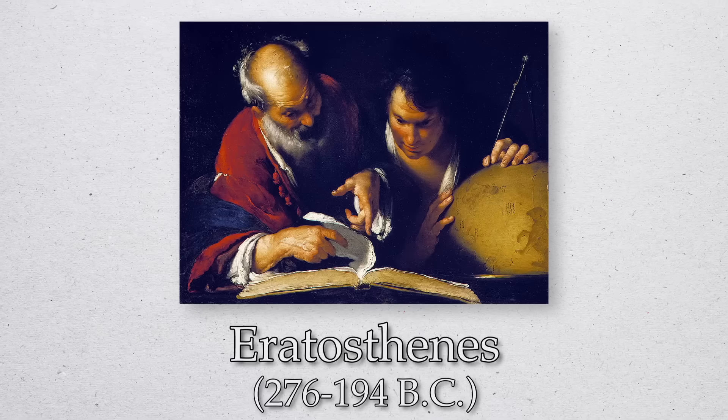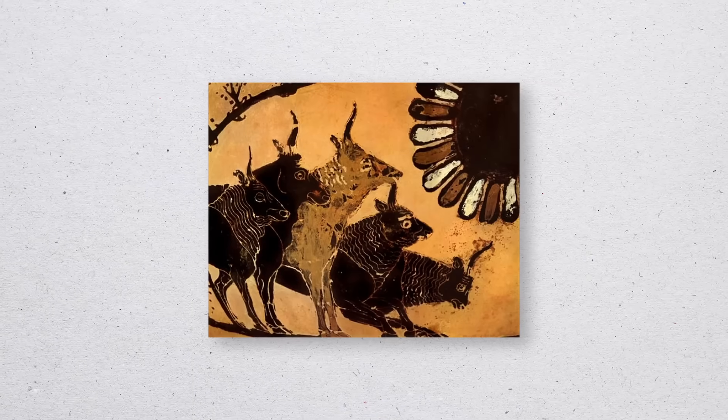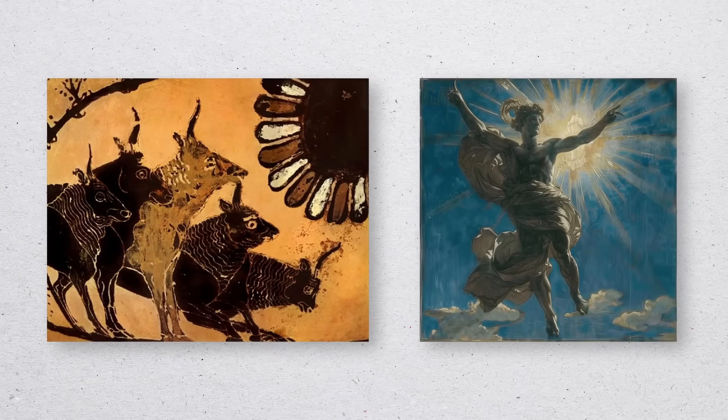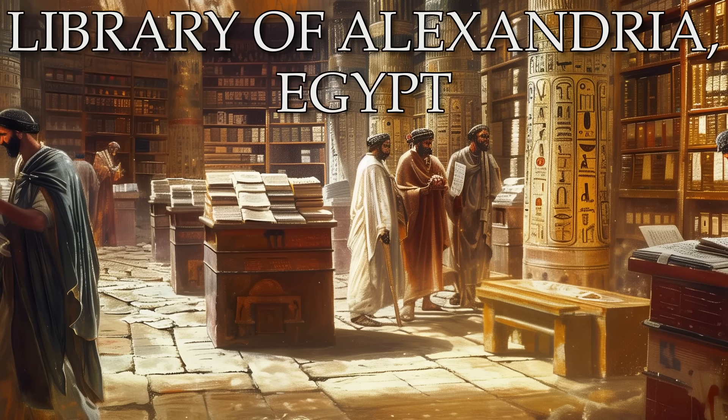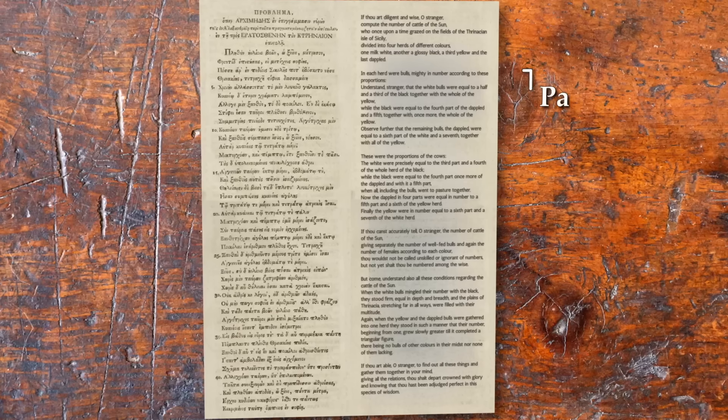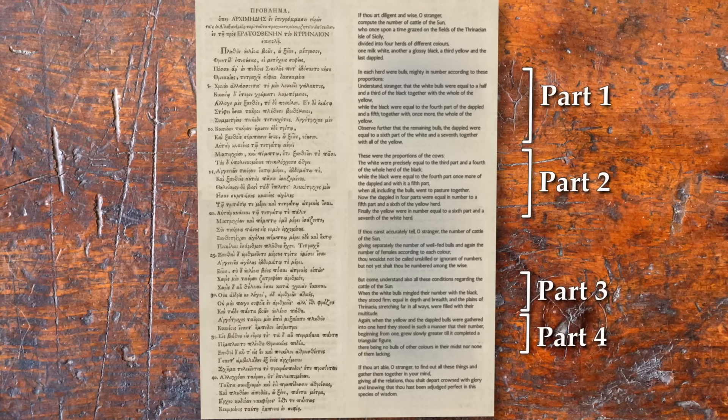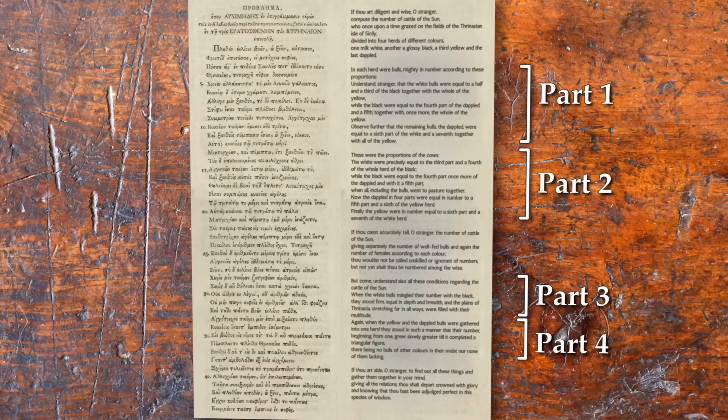The problem was sent to Eratosthenes as a poem about the number of cattle owned by the sun god Helios. Eratosthenes was the chief librarian at the Library of Alexandria and the second-best mathematician of his day. The problem has four parts that get more and more complicated, and the overall setup is more important than the specific numbers.